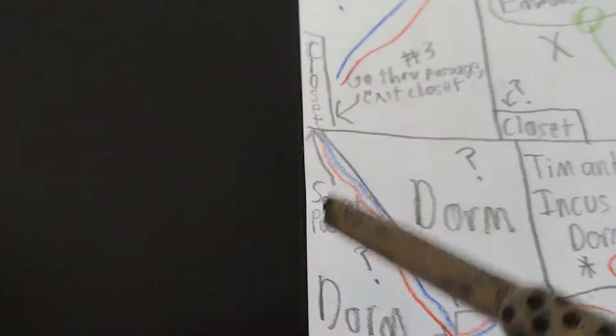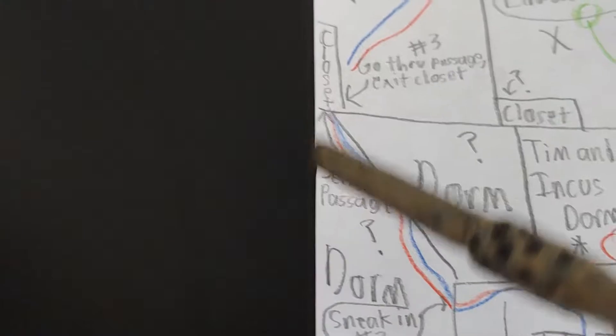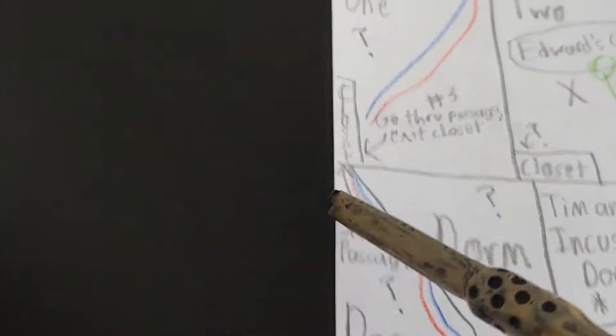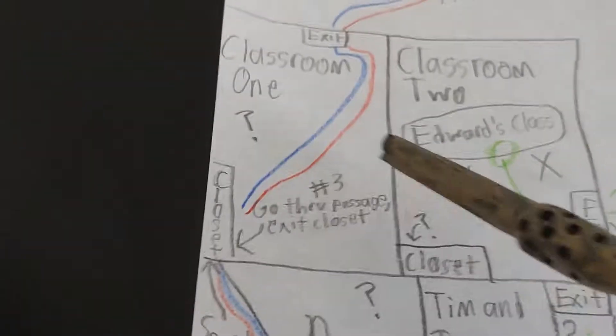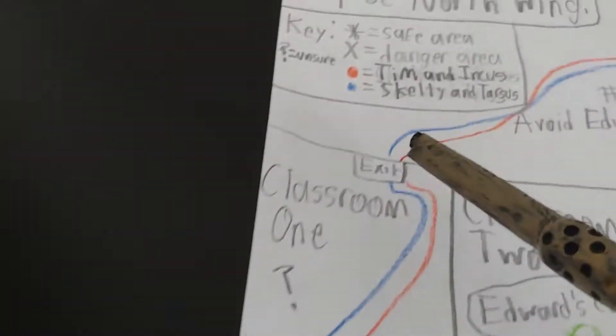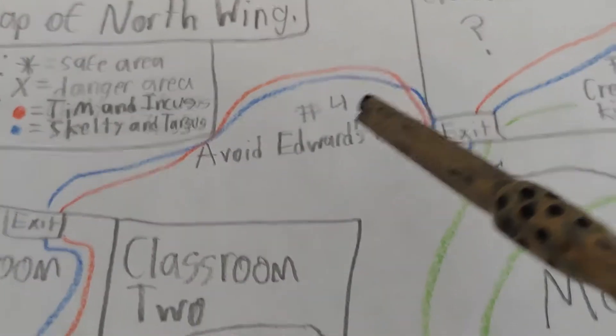Once we've met in the common area, we'll come through here and into this dorm. Why this dorm you ask? Because check it out, there's a secret passage right there. It's a big hole right in the wall that goes straight into this closet. We go through the passage and exit the closet, and depending what's going on here, we could exit the classroom.